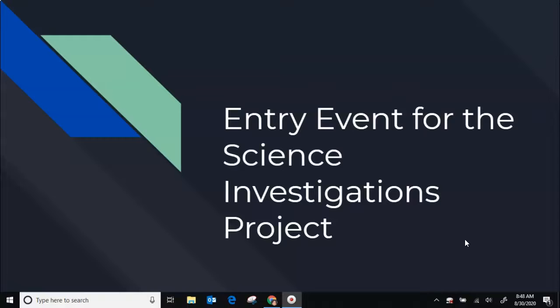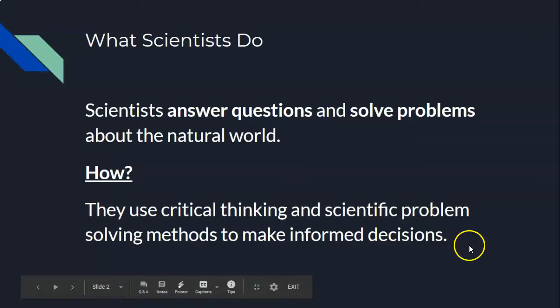So let's talk about what scientists do. Scientists like to answer questions and solve problems about the natural world, and they do this by using critical thinking and scientific problem solving methods to make informed decisions. They're kind of like mathematicians—they both like to answer questions and solve problems, just about different things, and a lot of times the two overlap.